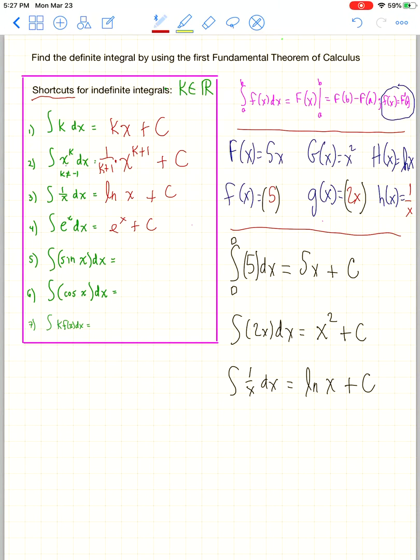Now for these next two, remember we had that trig ladder. Sine of an angle, cosine of an angle, negative sine of an angle, and negative cosine of an angle. So if you wanted to do derivatives we would go down.